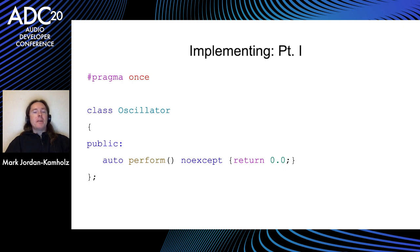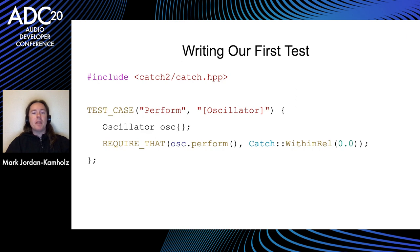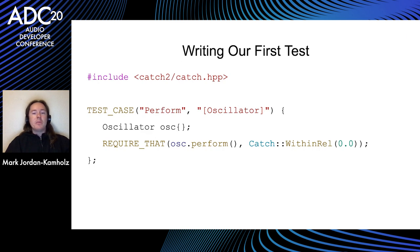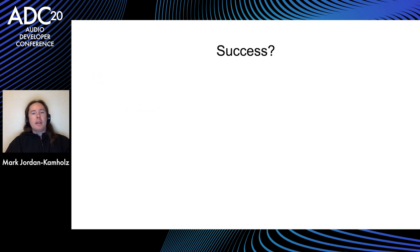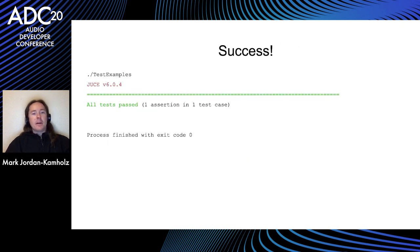So let's make the actual oscillator. In a header file, we'll make an oscillator class, and for space convenience, we'll do all our definitions in the header as well. For now, we'll just have one function called perform, and it'll just return zero, because we're just checking to see if the output is close to zero. And let's see if this works — it does. We have one assertion pass, one test case, and a couple of other things.